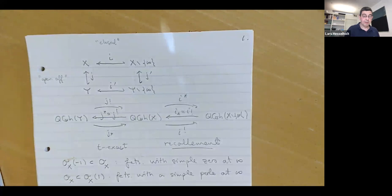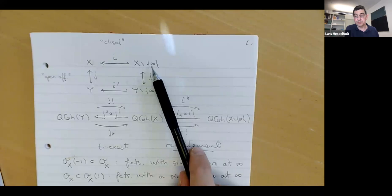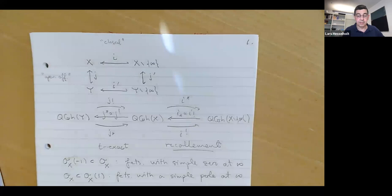So if we have a curve X and a point on the curve — I will call the point infinity — we should think that X is a complete curve. In a moment, I will take X to be just the projective line.